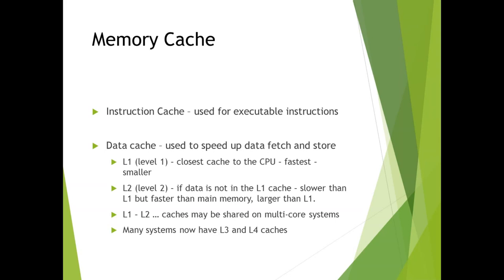There are two main types of memory caches. The first is the instruction cache, used for the execution of code — because code has to be brought into memory to execute. Most programs are sequential, but when you have loops, you want to keep the loop instructions in the cache because they'll be used often. The second is the data cache — this is where all the memory your CPU is going to act on gets stored.